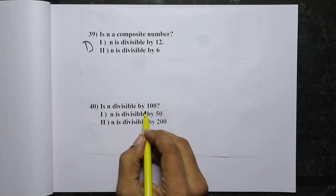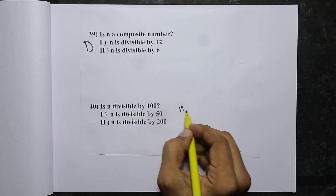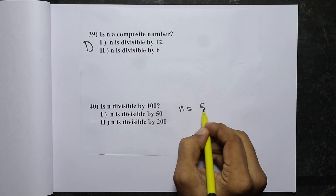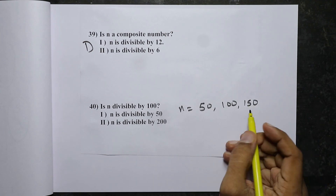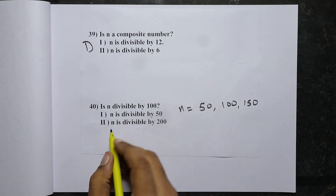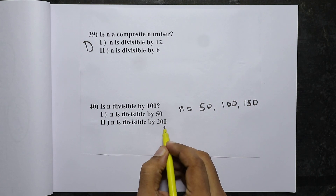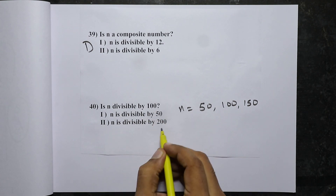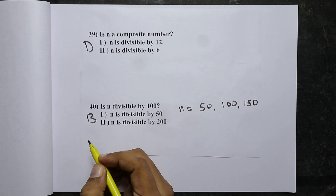Is n divisible by 100? The first statement says n is divisible by 50, giving possible values 50, 100, 150, and so on — so statement 1 alone will not do. The second statement says n is divisible by 200. If n is divisible by 200, then n must also be divisible by 100. So the second statement alone is sufficient. Hence B is the right answer.